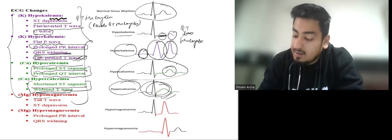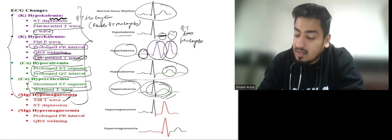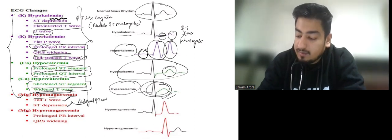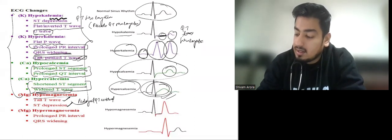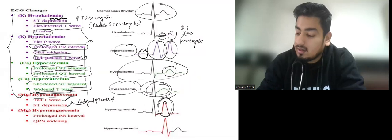In hypomagnesemia we have tall T wave, ST depression, and prolonged QT interval. Here we can see ST depression, tall T wave, and prolonged QT.